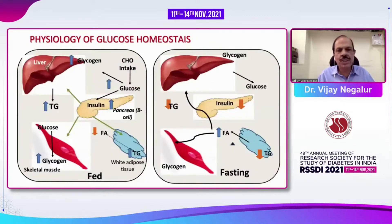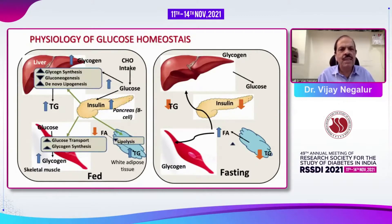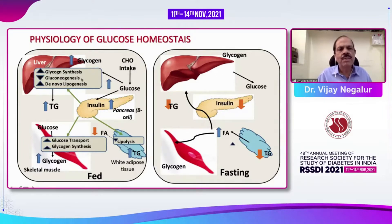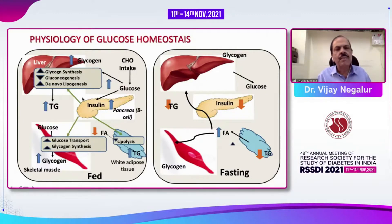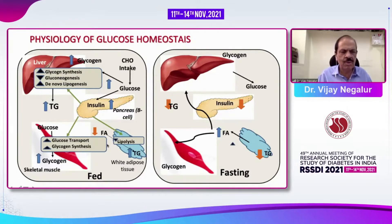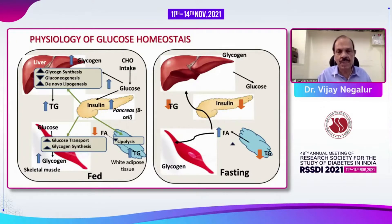Let's look at the physiology of glucose homeostasis. In the fed state, a large amount of food comes in, glucose comes in, and insulin is secreted from the beta cells of the pancreas. This leads to glycogen synthesis, stopping of gluconeogenesis, and de novo lipogenesis. Lipolysis stops, glucose is driven to the fat cells forming glycerol and storing triglycerides, and glucose is also transported to the muscle — 70% of glucose is transported to the muscle, which is a very important organ for storage.